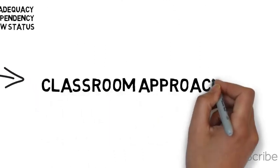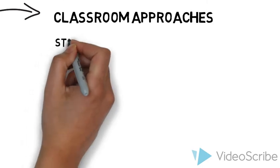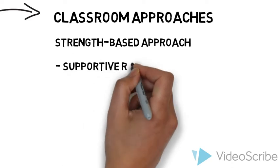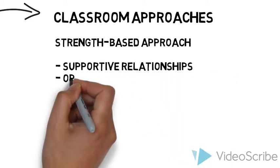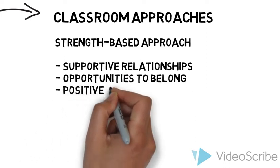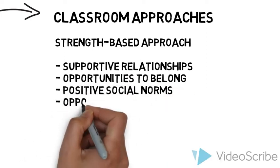Number two, classroom approaches. The first strategy we focused on is strength-based. The promotion of supportive relationships, opportunities to belong, positive social norms, opportunities for skill building are all strategies teachers can implement in classroom practice to help Dylan disengage in high-risk behaviours.